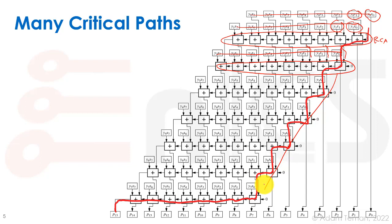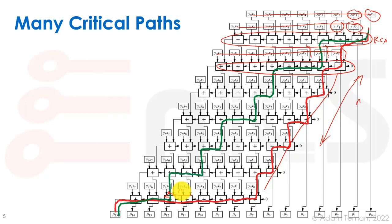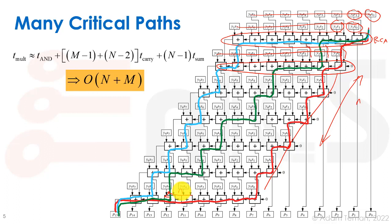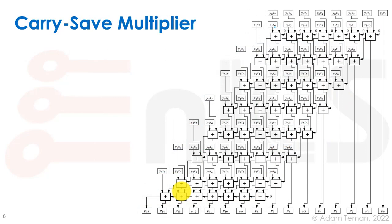The problem with the array multiplier is the critical path: the carry must propagate down through all the adder stages and then through the final ripple carry adder — a path of length proportional to n in one direction and n in the other, giving roughly O(n + m) or O(2n). There are also many such critical paths, making optimization difficult.